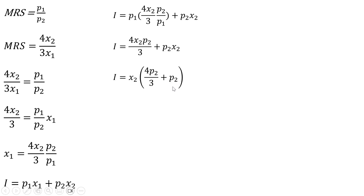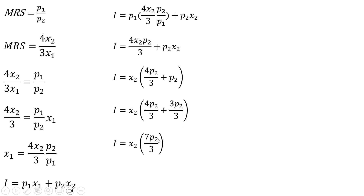Now we add what's in parentheses by getting a common denominator and adding the terms. We get this result, and then multiply through by the reciprocal to move the bracketed term to the left-hand side. This gives us the demand for Good 2: x subscript 2 equals 3 times money income divided by 7 times the price of Good 2.